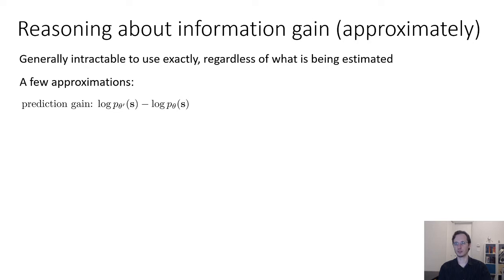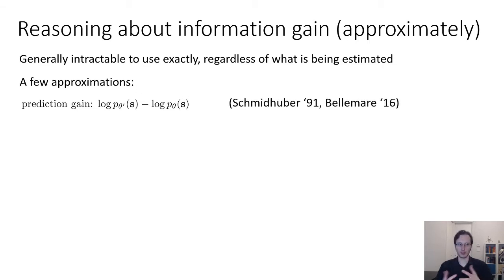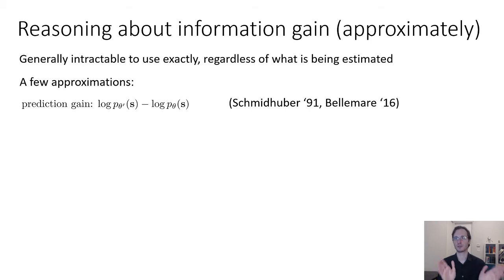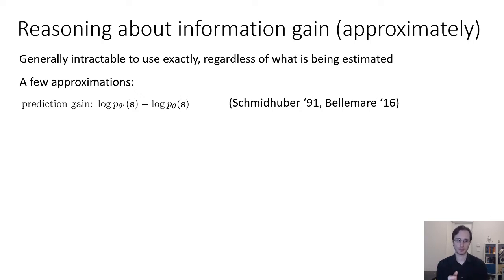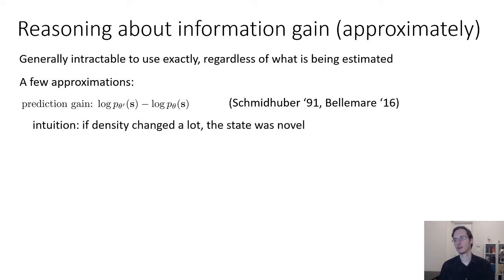Prediction gain is the difference between log p_θ'(s) and log p_θ(s). Thinking back to the lecture on pseudocounts, θ' denotes the new parameters of a density model that we get after updating on the latest state θ. So if you compare the log probabilities of that new state before and after updating on it, that refers to prediction gain, which is an approximation for information gain — specifically the information about the state density. The intuition is that if the density changed a lot, then the state was very novel.